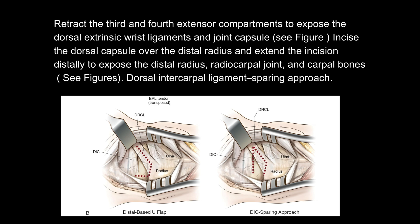Incise the dorsal capsule over the distal radius and extend the incision distally to expose the distal radius, radiocarpal joint, and carpal bones. Dorsal intercarpal ligament sparing approach.